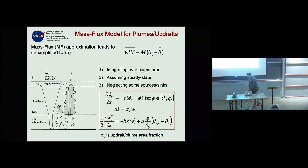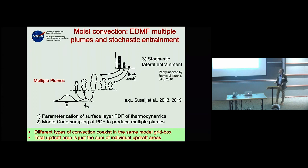That's why we wanted to bring it all together: with this multiple-plume approach, you allow some plumes to do dry mixing, others to do shallow convection, and others to do deep convection — just as the atmosphere allows.